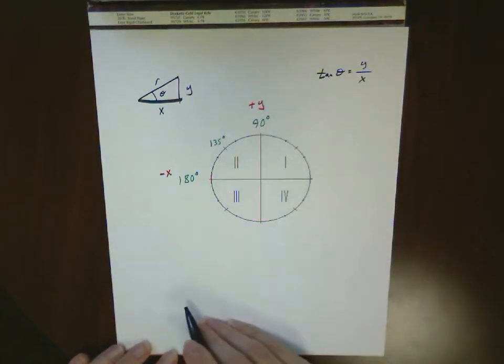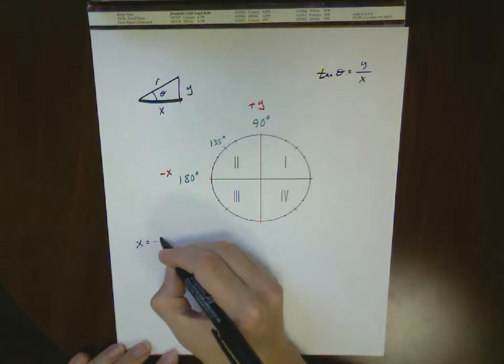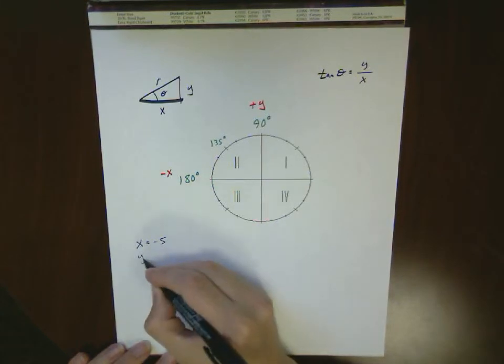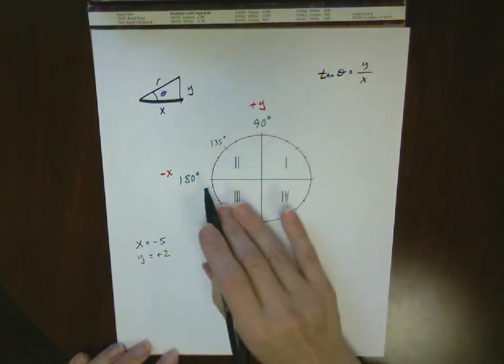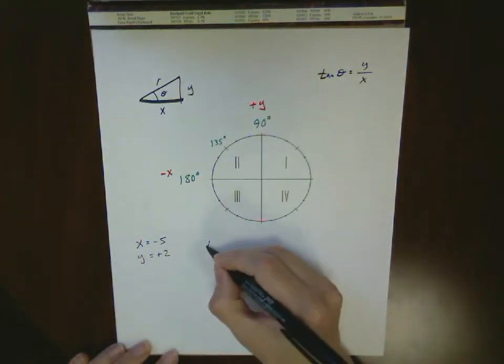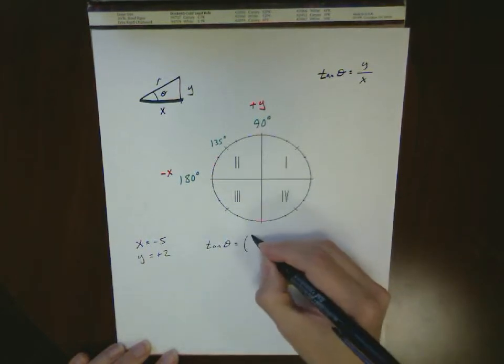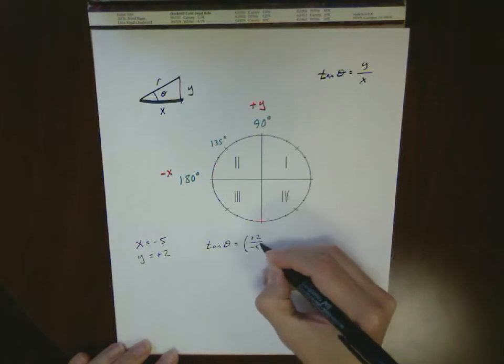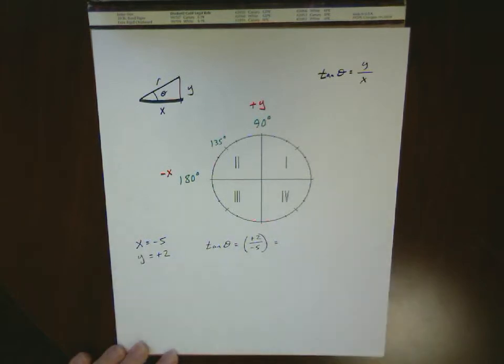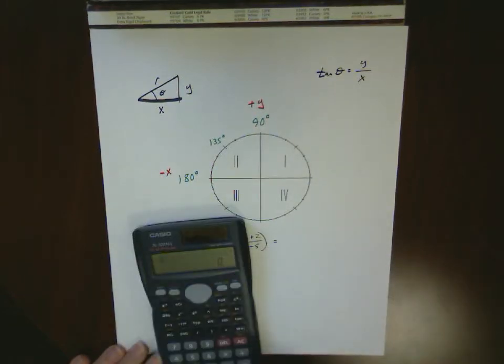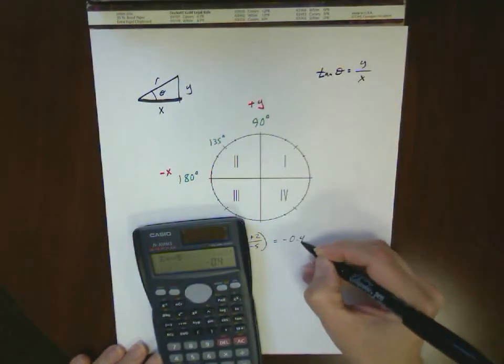Let's take a look at an example. Say I have a value where x equals -5 and y equals +2. That's a second quadrant value. The tangent of theta, according to this equation, is going to be +2 over -5. I can calculate that out - you should be able to do this in your head, but just in case - that gives us -0.4.